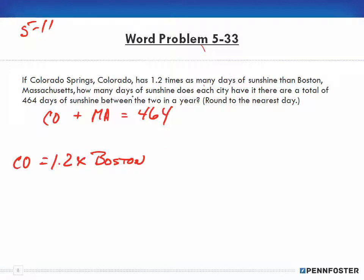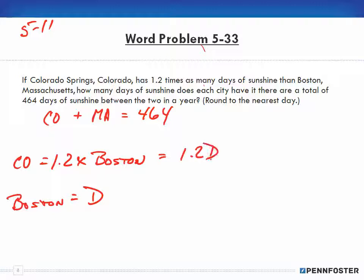It asks how many days of sunshine does each have if there are 464 days. So we have Colorado plus Boston equal to 464, and the relationship is Colorado is 1.2 times Boston. Since we can't know Colorado until we know Boston, we set Boston as the variable d. That makes Colorado 1.2 times d.